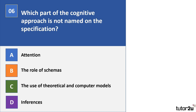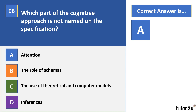Question 6: which part of the cognitive approach is not named on the specification? A. Attention. B. The role of schemas. C. The use of theoretical and computer models. D. Inferences. The correct answer is A. The specification says 'study of internal mental processes' — attention is one, as are perception, memory, and consciousness, but it's not named explicitly. Schemas are named, as are theoretical and computer models and the use of inferences. What's missing from the specification content listed here is the emergence of cognitive neuroscience.